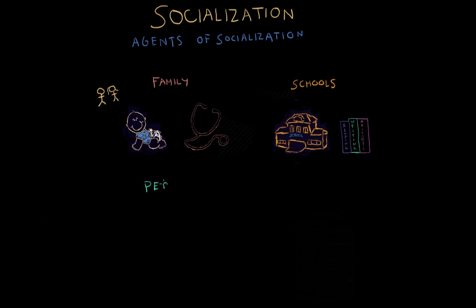Peers help us develop our social behavior. There are moments in life where our friends' values and behavior contradict the values of our families, so it's really up to you to decide which norms and values to keep and which to discard. Peer pressure is an example of how peers influence us — many times teens are pressured to drink and do drugs. Peers during our teenage years also influence what movies we watch or even the music we listen to.